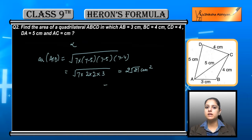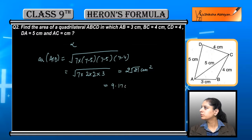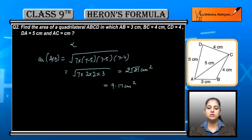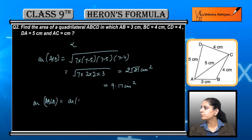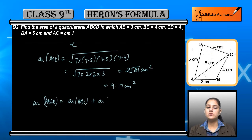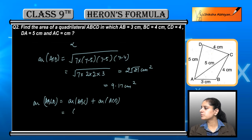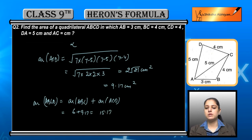Now to find the total area of the quadrilateral, it will be equal to the sum of both the triangles' areas. So area of ABCD equals area of ABC plus area of ACD, which is equal to 6 plus 9.17, that is 15.17 cm².